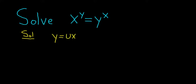Then what we do is we just replace both sides of this equation. So I'm going to replace this y here with ux and this y here with ux. So we get x to the ux equals ux to the x.